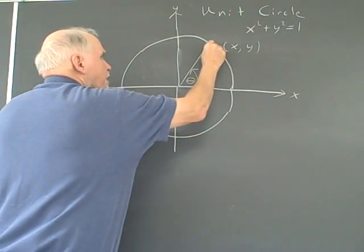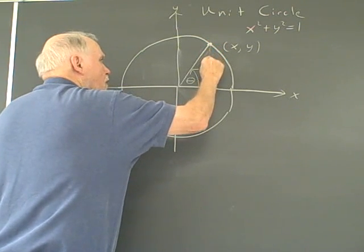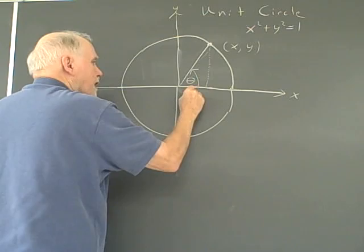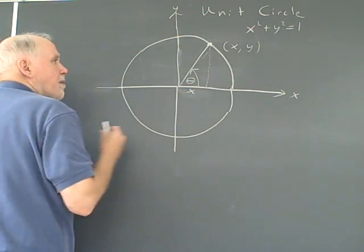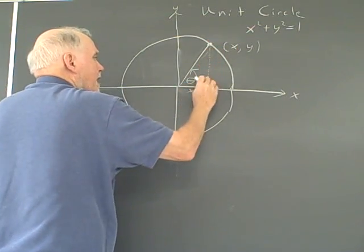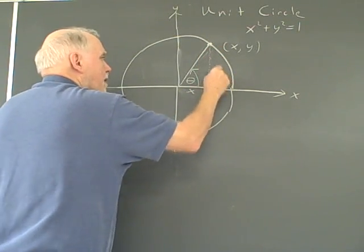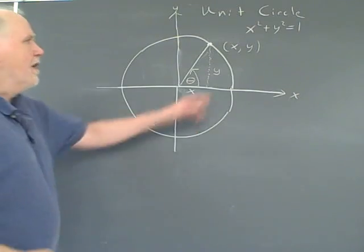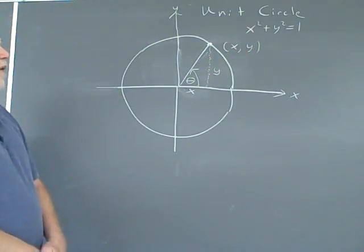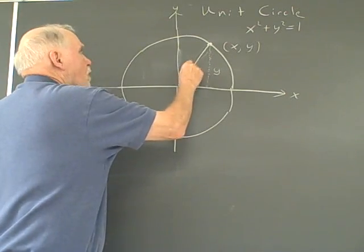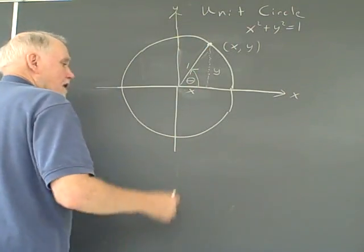Now if I drop an altitude, it will form a right triangle. And this side of the right triangle is actually the x-component. And this altitude is the y-component of the ordered pair here from that point. Now, of course, we know this radius is one, it's a unit circle.